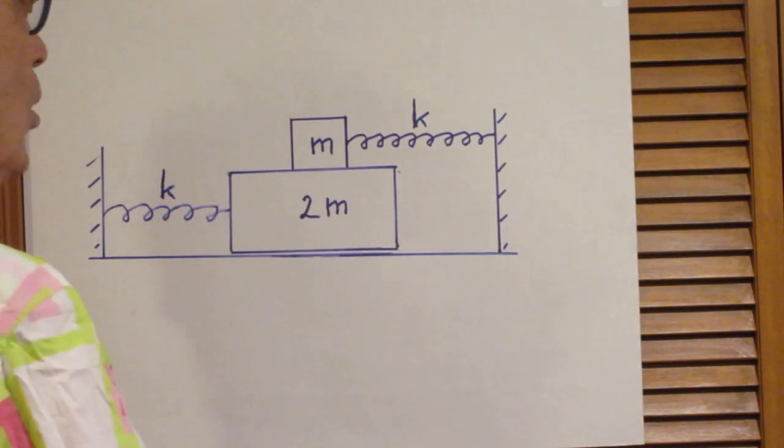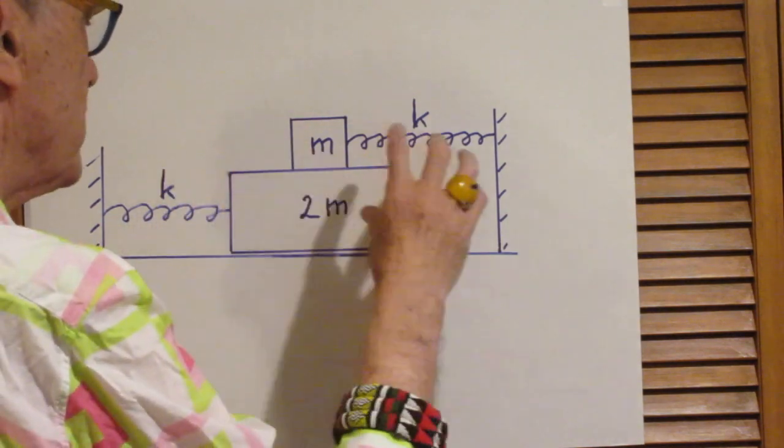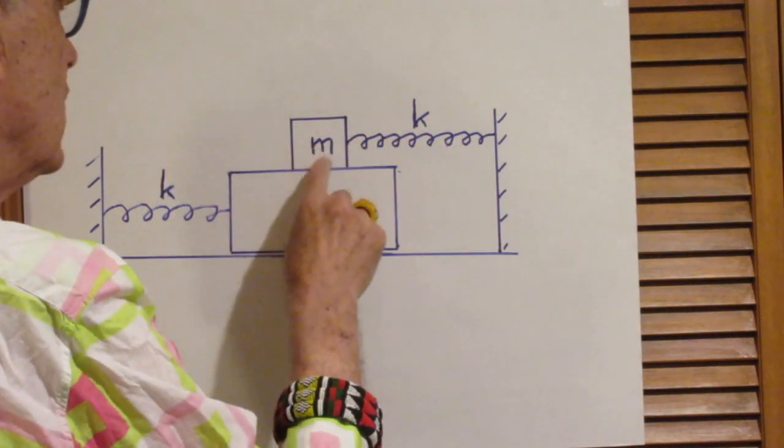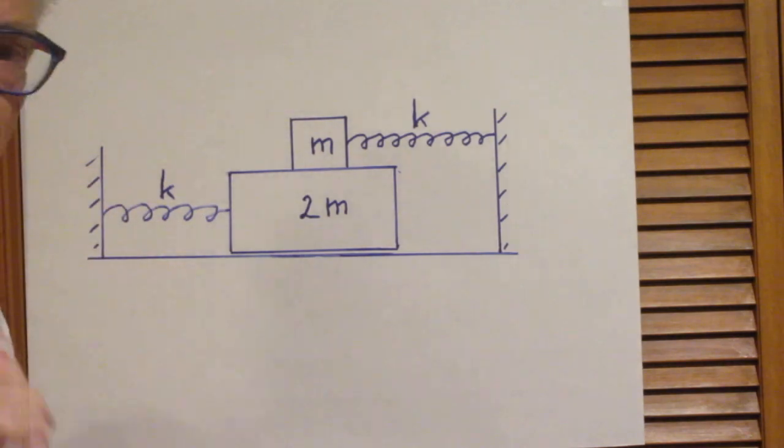So what now is the largest amplitude of the system when it oscillates so that it just is not yet slipping?